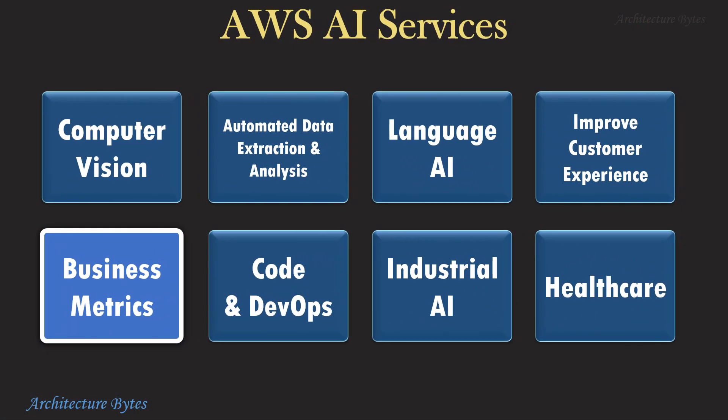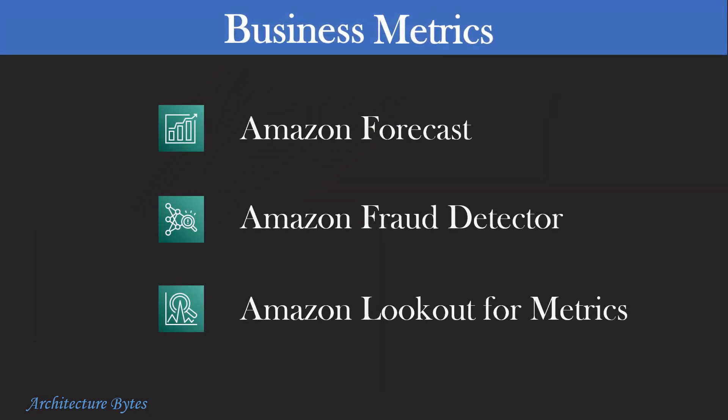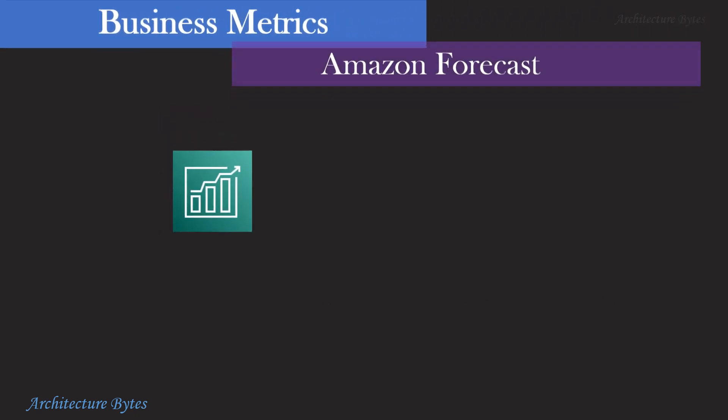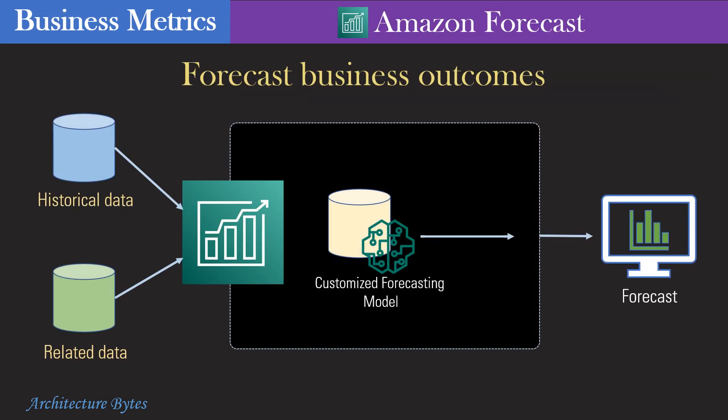Our next AI service category is Business Metrics. Under Business Metrics, we have Amazon Forecast, Fraud Detector, and Lookout for Metrics. Amazon Forecast predicts outcomes. Based on machine learning, it is a time series forecasting service. You could use it at an e-commerce company to forecast inventory requirements or staffing needs in advance, thereby improving capital utilization and decision making.